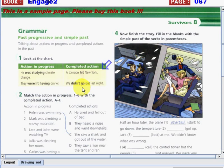Let's read the sentences now. Let's start first with our action in progress: He was studying climate change. They weren't having dinner. Our completed action: A tornado hit New York. We didn't go out last night.